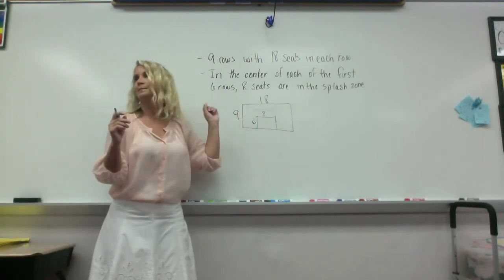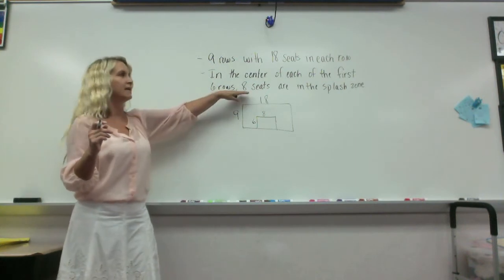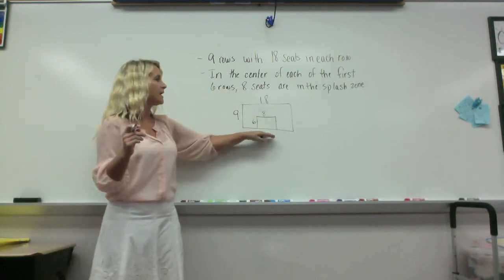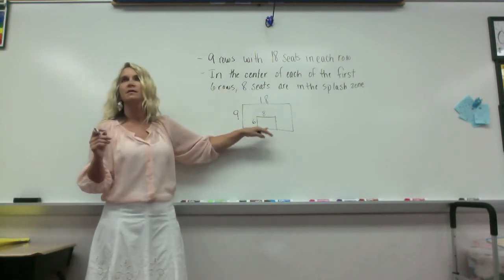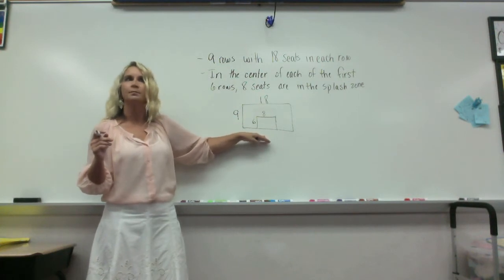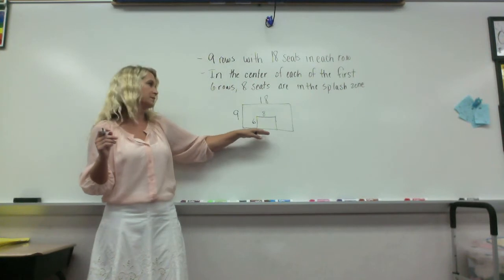And Miranda, what does the eight come from? The eight seats in each row. And why does she have this array touching the bottom of our first array? Who can explain to me why she has the bottom touching, what do you think?